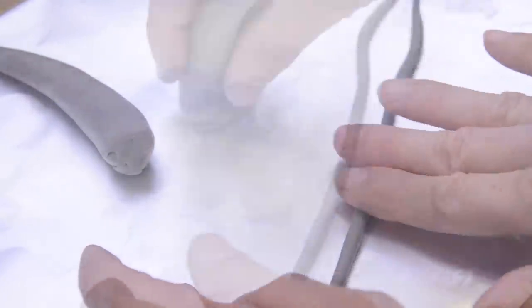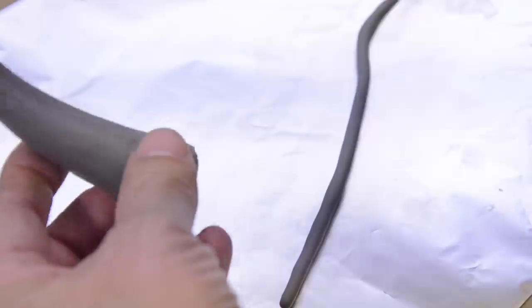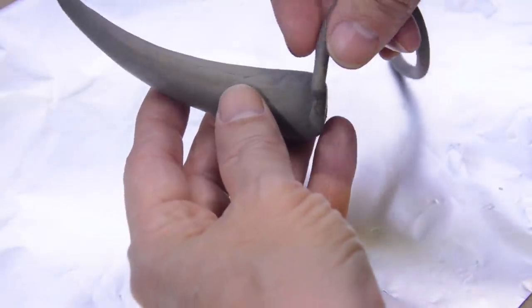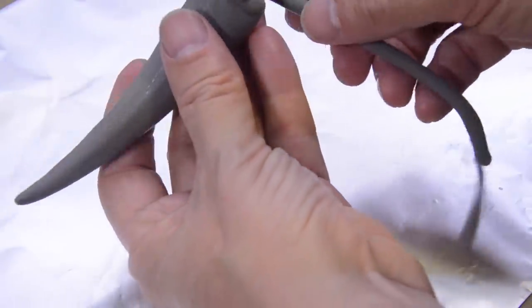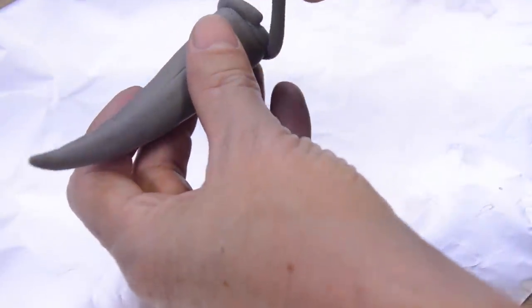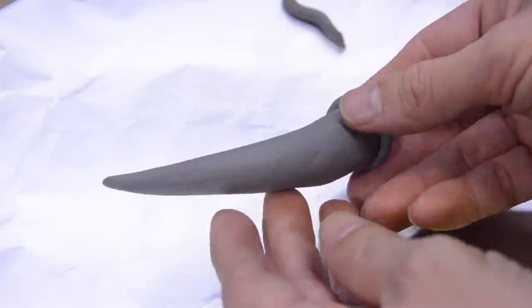Roll it out. And the great thing about this foam clay is it sticks to itself really well. So just push it on and apply and wrap it around. The horn looks great, we're going to set that aside and let that dry.